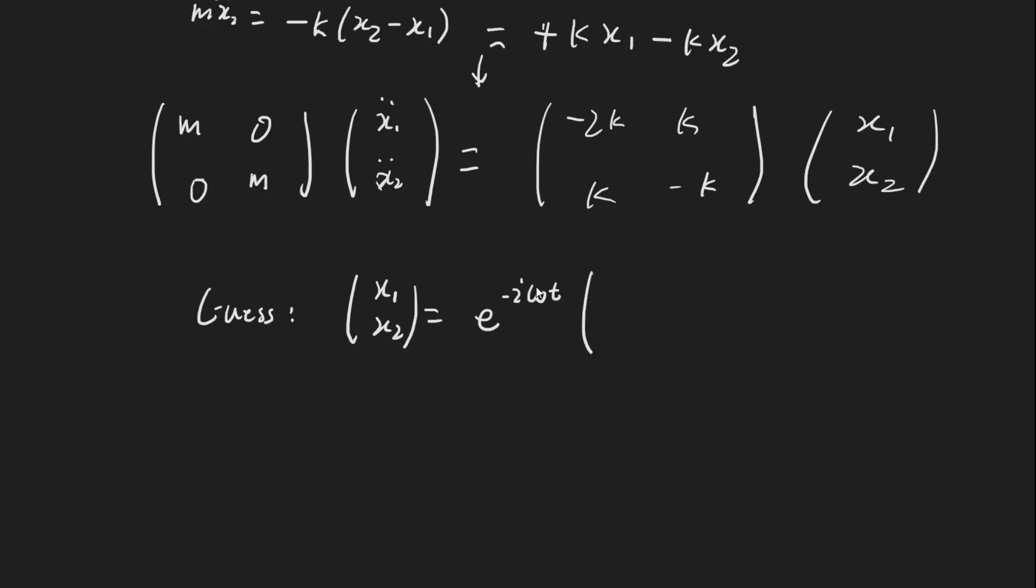Our guess is going to be x1, x2 is equal to e to the minus i omega t. This is the angular frequency. And we have to find that times a matrix A1, A2, which refers to their amplitudes. And we're going to write this, we're just going to call this A, this matrix A.